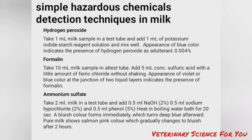Detection of formalin — take 10 ml milk sample in a test tube and add 5 ml concentrated sulfuric acid with a little amount of ferric chloride without shaking. Appearance of violet or blue color at the junction of the two liquid layers indicates the presence of formalin.